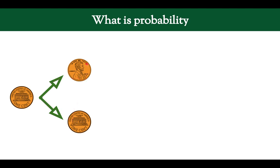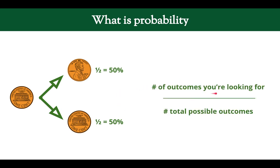Now let's talk about probability in the context of flipping a penny. When you flip a penny, you have one of two options: heads or tails. So what's the probability of getting heads? It's the number of options that we want over the number of total options. There's one possibility we want — heads — over two total possibilities, heads or tails. So one over two is 50%. The probability of getting tails is also 50%. And if you add up the probabilities of all the possible options, it should add up to 100%. That's the formula: the number of outcomes you're looking for over the number of possible outcomes.